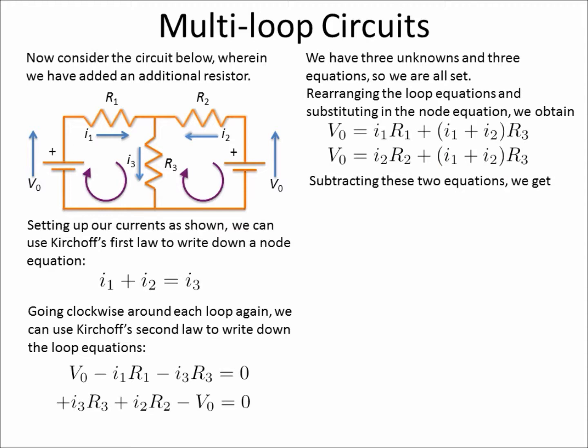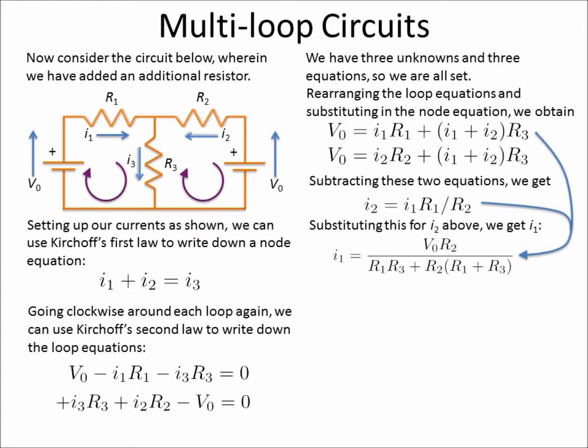If we subtract these two equations to reduce this down even further, we can see that I2 is equal to I1 times R1 divided by R2. And substituting this for I2, we can get I1 out.